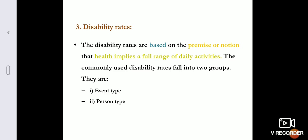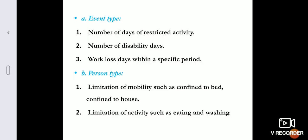Disability rates are based on the notion that health implies a full range of daily activities. Disability falls into two categories: event type and person type. Event type includes the number of days of restricted activity, disability days, and work loss days within a specified period. Person type includes limitation of mobility such as being bedridden or confined to the house, or limitation of activities such as eating and washing. This is the person type.